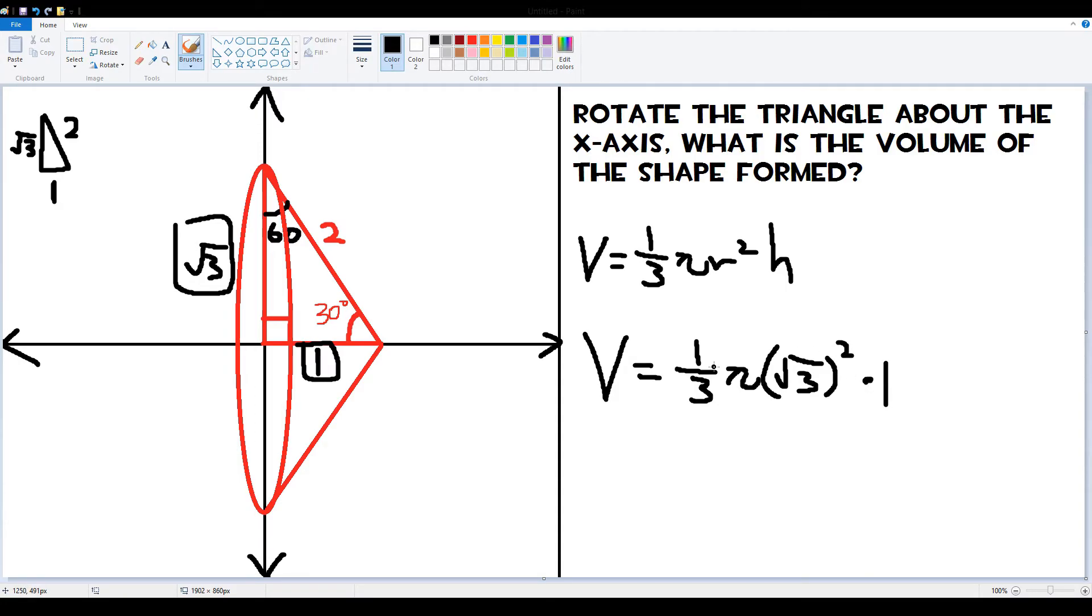Now, let's simplify this. 1 over 3 times pi. And root 3 squared. Square root and squaring are inverse functions. Basically, they cancel each other out. So we get just 3. Because this is kind of like, for square root, it's like having the interior number to the power of 1 over 2.